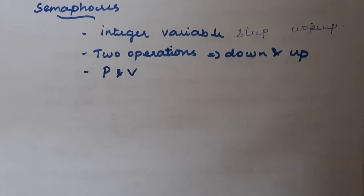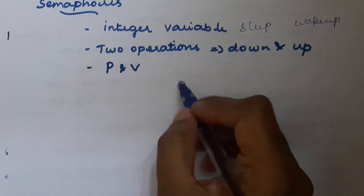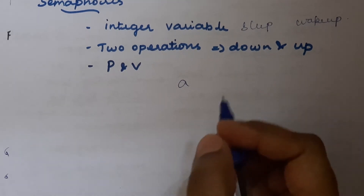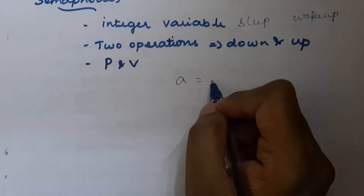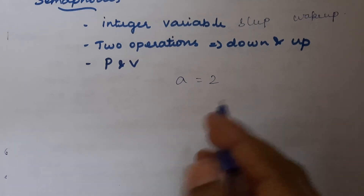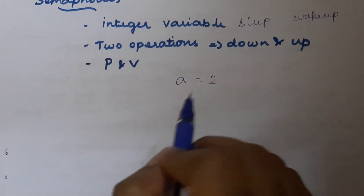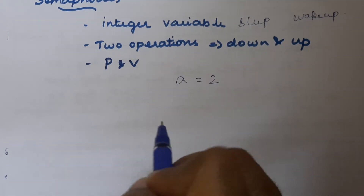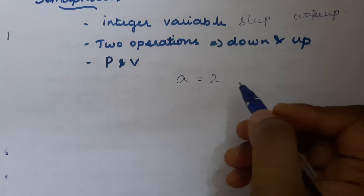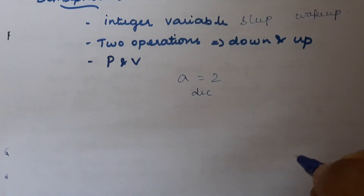We have two operations: down and up. The down operation is used to decrement the value. Let the semaphore variable be called 'a' — any user-defined name can be given. If the value of 'a' is zero or a positive integer: if it is zero, we need to increment it to wake up that process. A value of zero means some process has already executed and performed the sleep operation, setting the semaphore value to zero. If it is a positive integer greater than zero, we need to decrement it and continue our operation.